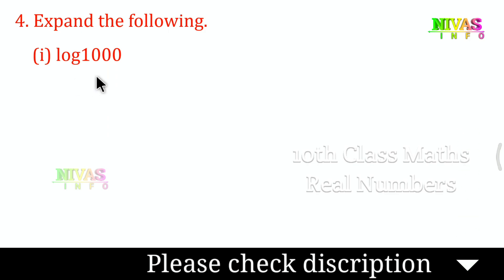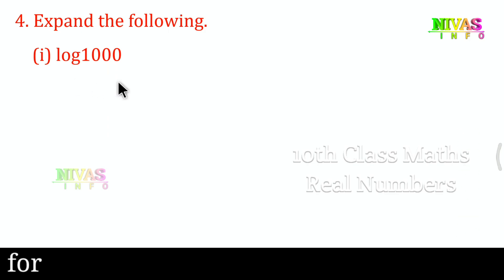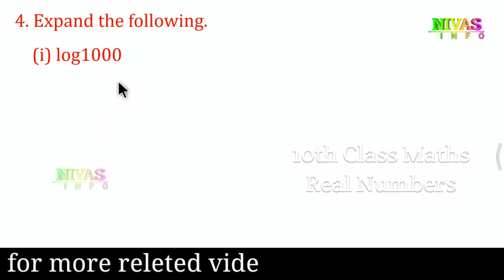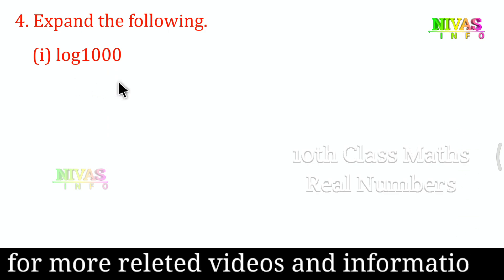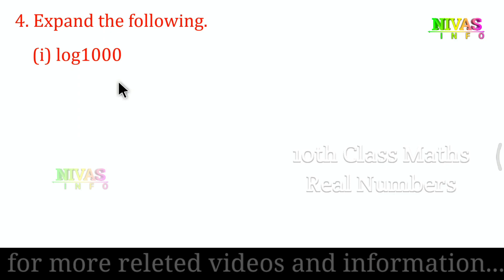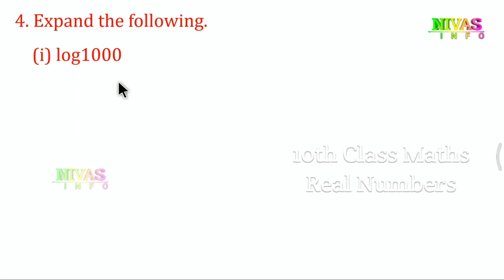First problem: log 1000. If you expand 1000 into factors, you can write 1000 as 10 into 10 into 10, which is 10 cubed. So log 1000 equals log of 10 to the power of 3.